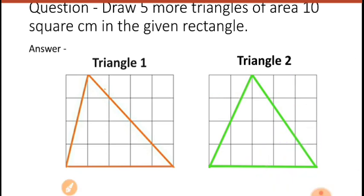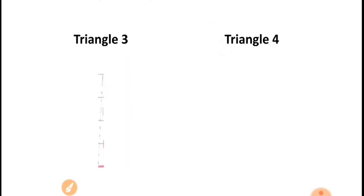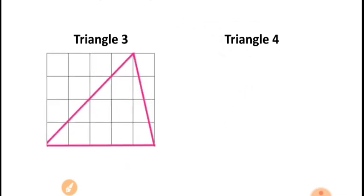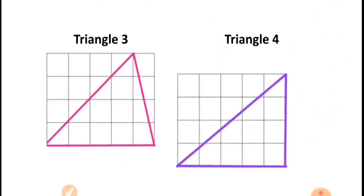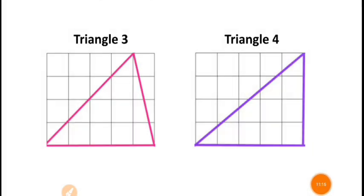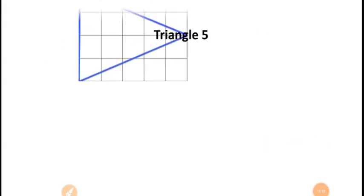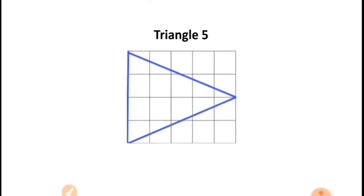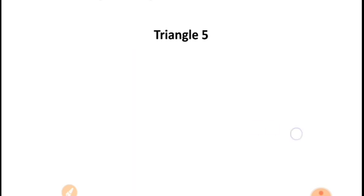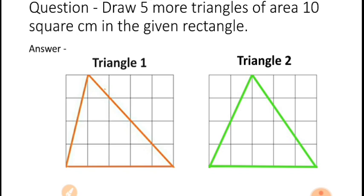Number three is also different. Number four is also different. Number five is also different. So you can see all five triangles are of different shapes, but the area is the same — 10 square centimeters. So what is the magic? There is no magic — just see the concept.